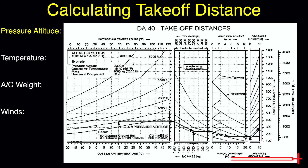Our pressure altitude for this example will be 3300 feet — I've included a link in the description to a video covering how to calculate pressure altitude. Temperature today is 29 degrees Celsius based on the METAR. Aircraft weight is found during our weight and balance computation; let's say today we expect a 2300-pound takeoff weight. Next is winds — we need to find only our headwind or tailwind component. Let's assume a 16-knot headwind component today. If you're unfamiliar with how to find headwind or tailwind components, please check out the crosswind component calculations video linked in the description, where I explain how to find headwind and crosswind components with just your iPhone calculator and a local METAR.